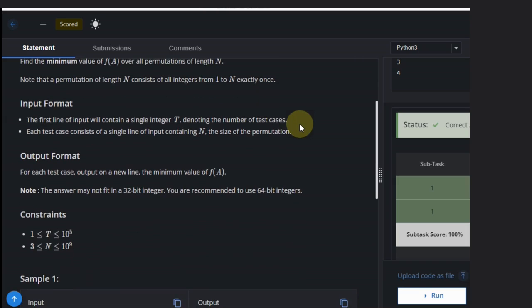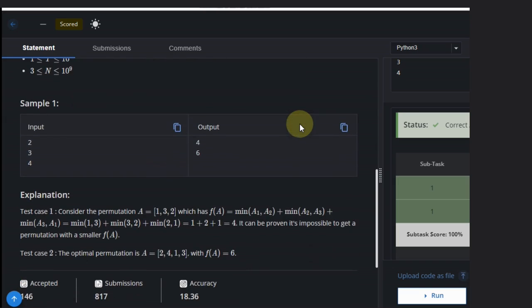Let's say we have N equal to 3, so we have 1, 2, 3. If we take the minimum value of this: this is 1, this is 2, and this is 1. Yes, it is.